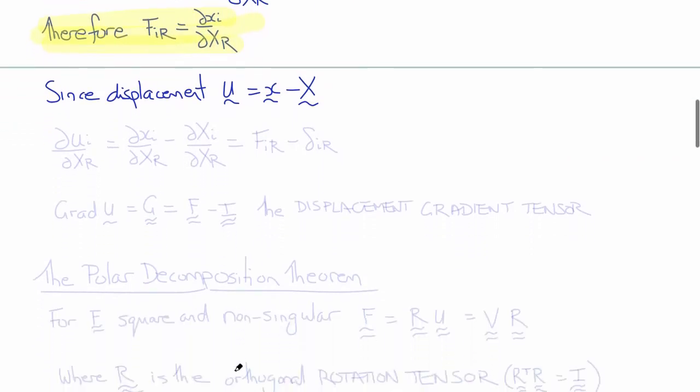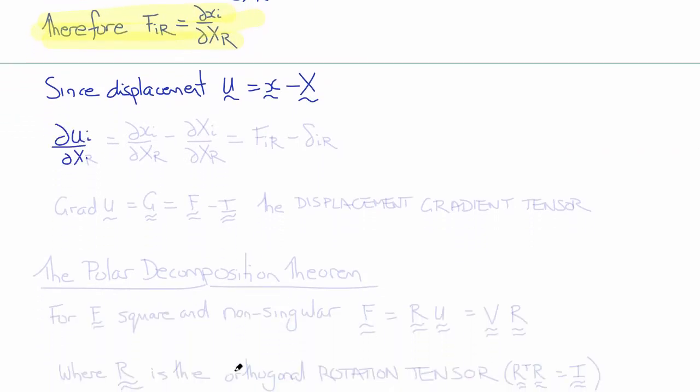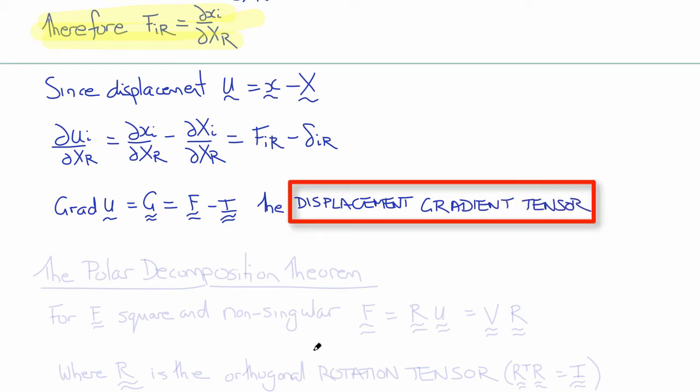Since displacement is little x minus big X, then the displacement gradients del ui del big Xr equal del xi del big Xr minus del big Xi del big Xr, which is F_ir minus delta_ir. In other words, the displacement gradients, which are grad of u, and the capital G there is intentional to represent derivatives with respect to the reference coordinates, is equal to F minus I. So G is the displacement gradient tensor, just the deformation gradient tensor minus the identity tensor.